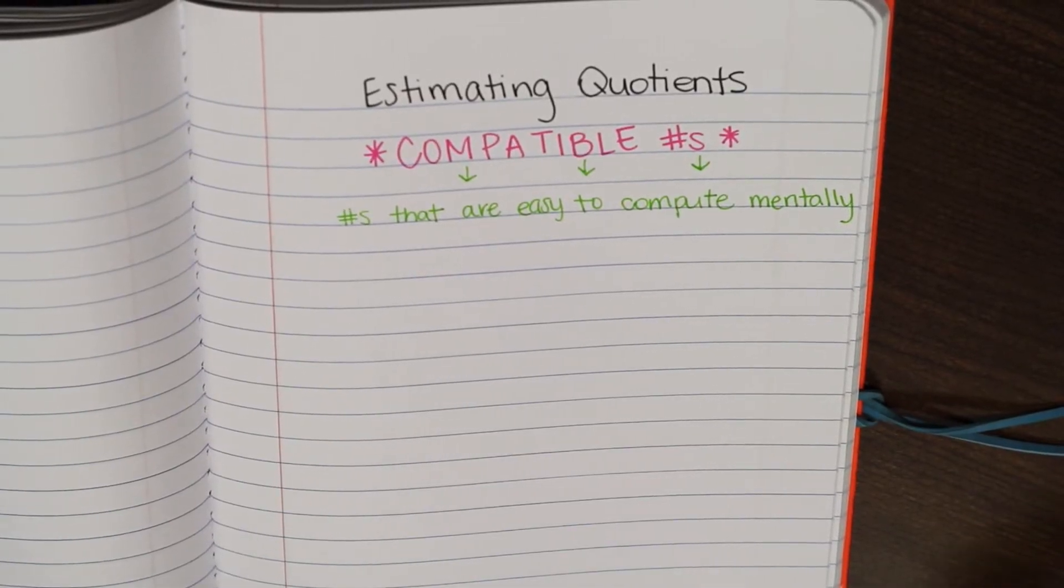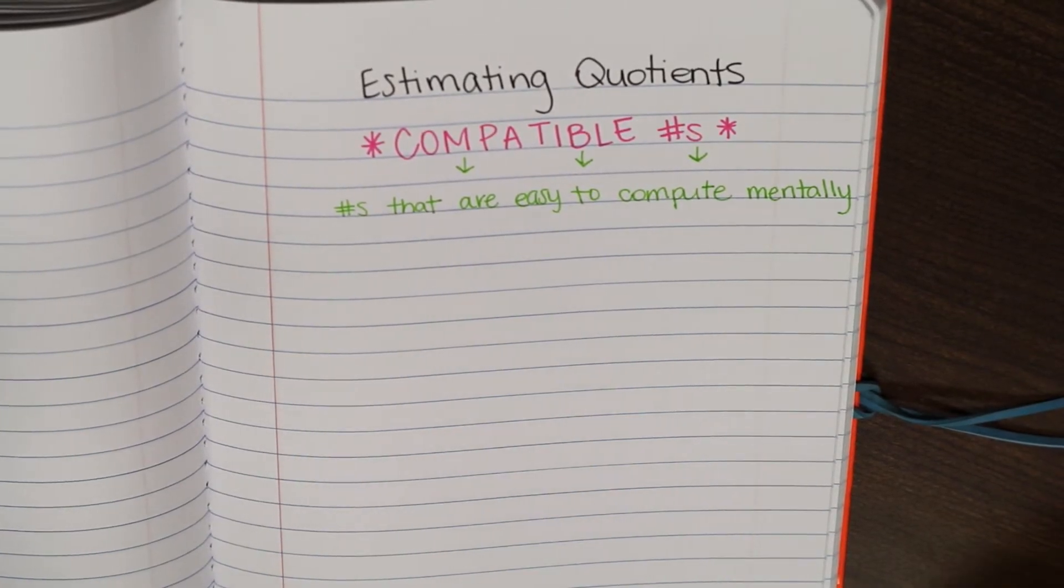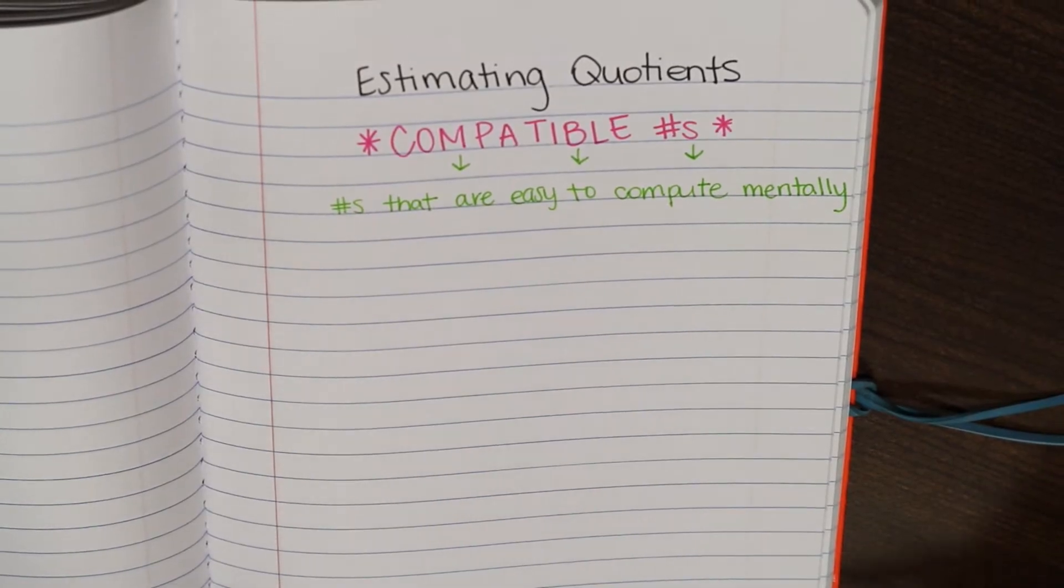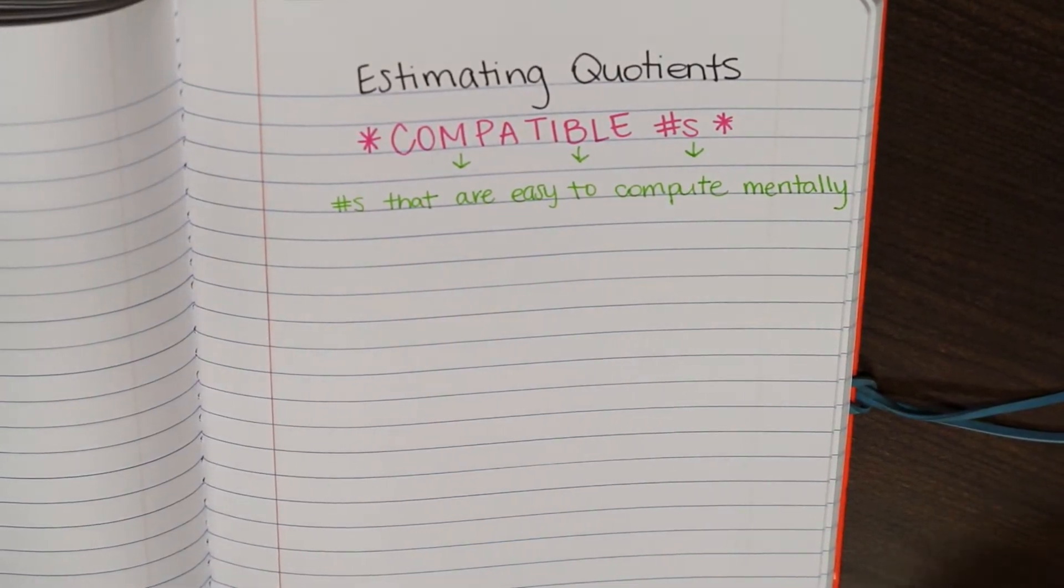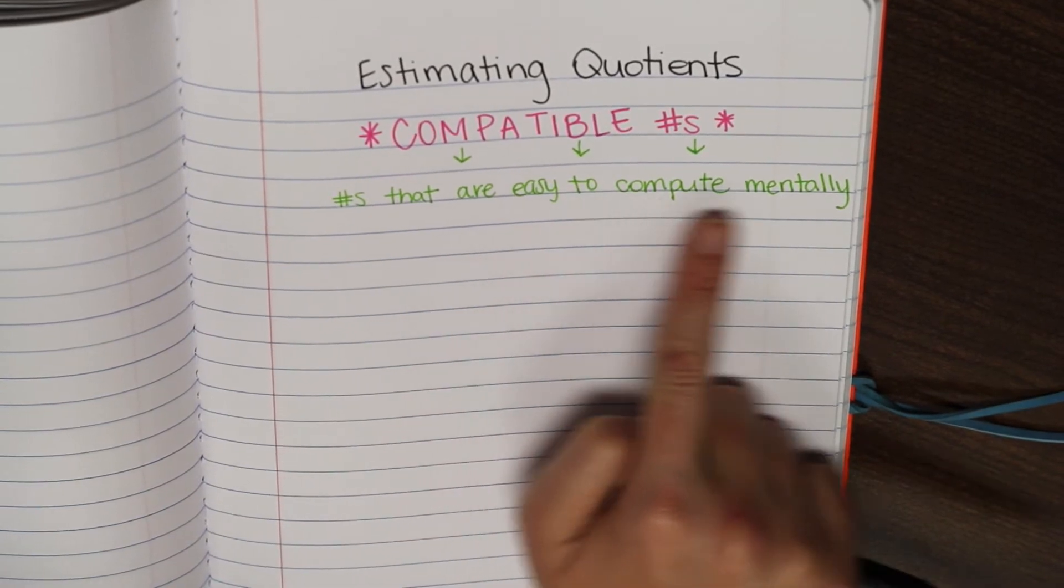Okay, so today we're going to be talking about estimating quotients. And when you're estimating quotients, I want you to keep the vocabulary term in your head, compatible numbers. So we're going to be using that term a lot. So you need to know that compatible numbers are numbers that are easy to compute mentally.